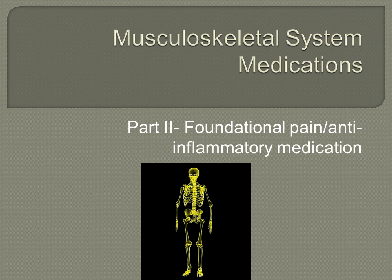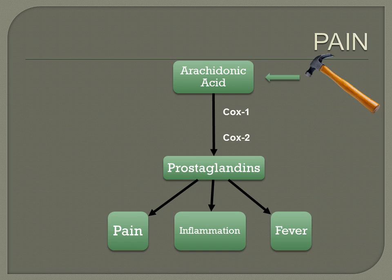This is part two of the lecture for the Musculoskeletal System Medications. We're going to go over foundational pain medications and anti-inflammatory medications. I'd like to briefly start out by explaining what happens when we have pain to help you understand how some of these pain medications work. By understanding how a medication works, the side effects make sense — they're not just a random set of symptoms you're trying to memorize.